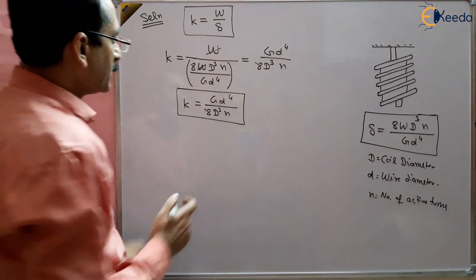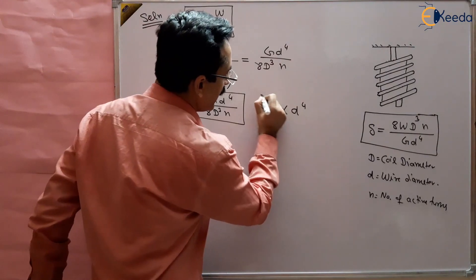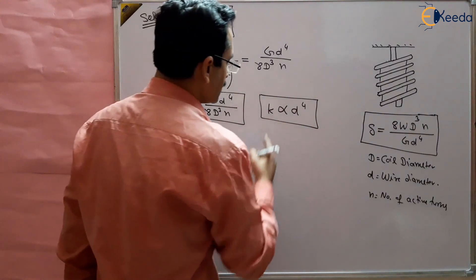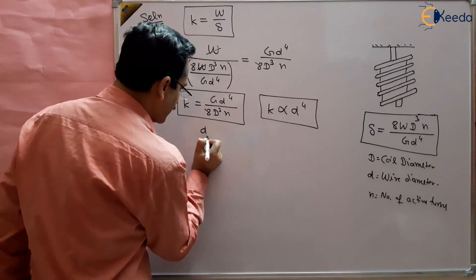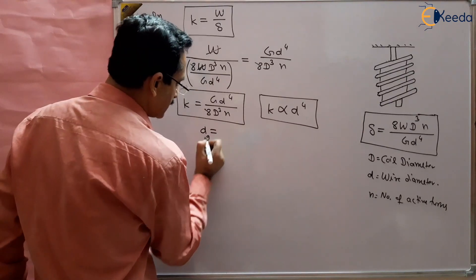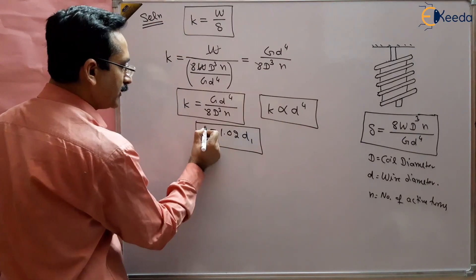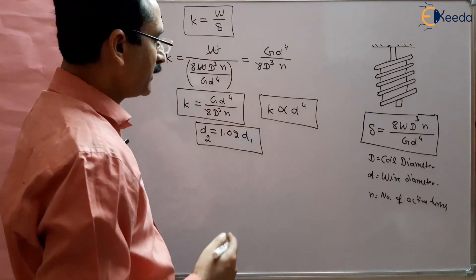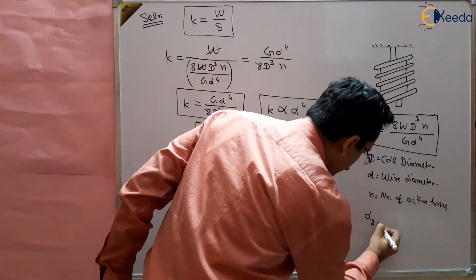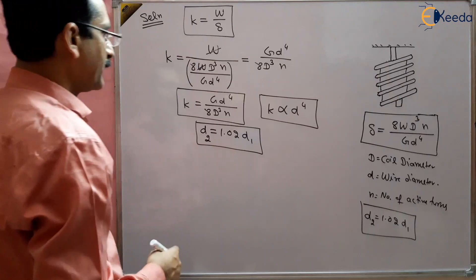Since other things are constant, spring stiffness k is proportional to small d to the power 4 — the wire diameter to the power 4. Initially the wire diameter is d1, and finally it is increased by 2 percent, so d2 = 1.02 × d1.